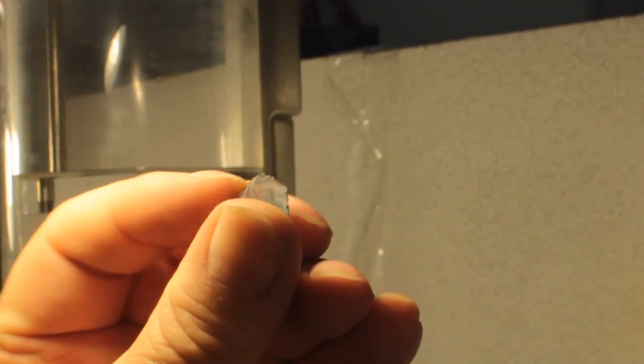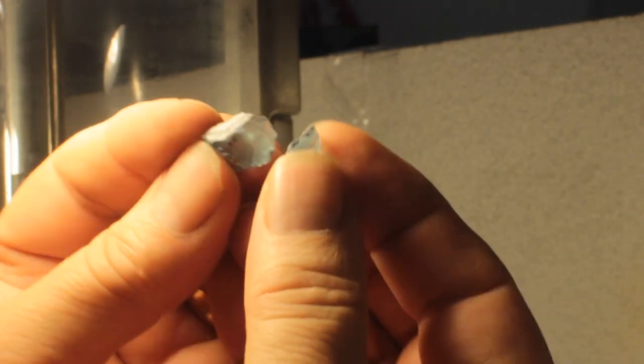This is aquamarine, a trim piece. It had a veil running completely through the stone, so I trimmed it off and have a nice little trim piece. Should be able to get a 9 or 10 millimeter round out of it instead of grinding it off.